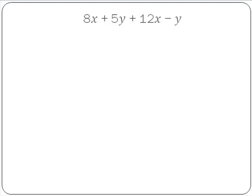Now we have 8X plus 5Y plus 12X minus Y. So in this one we have 2X terms and we have 2Y terms.